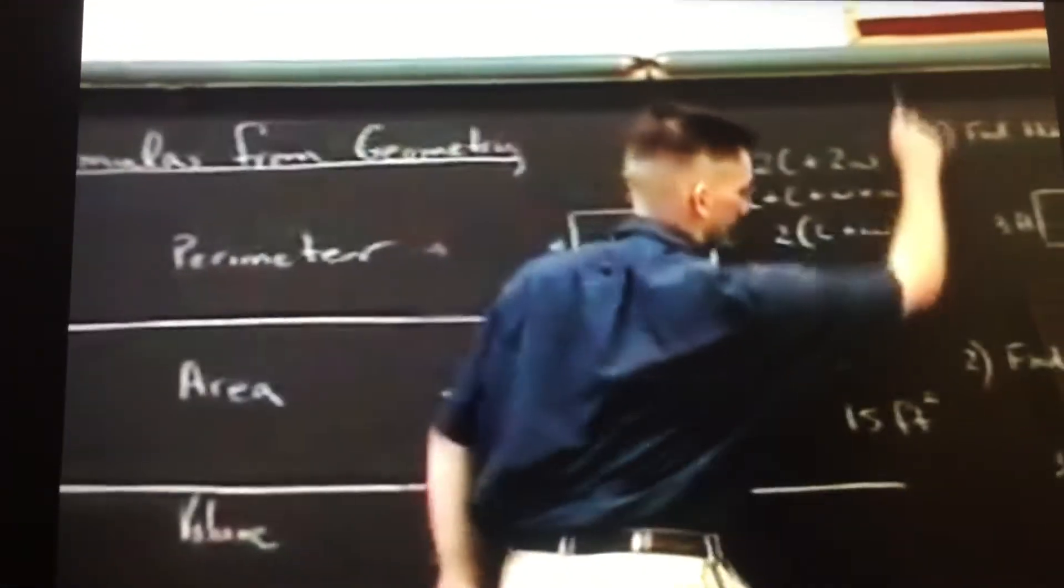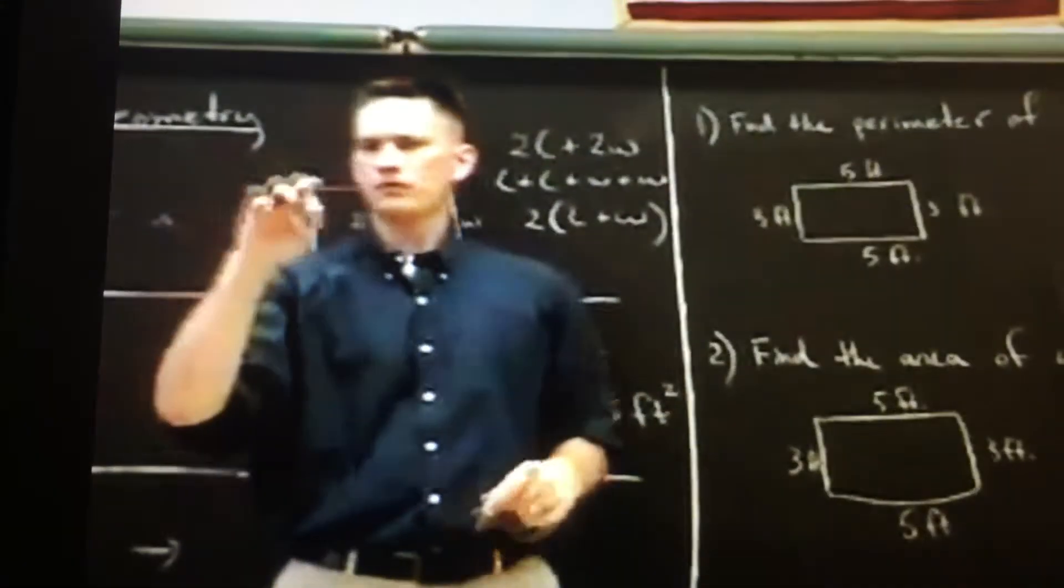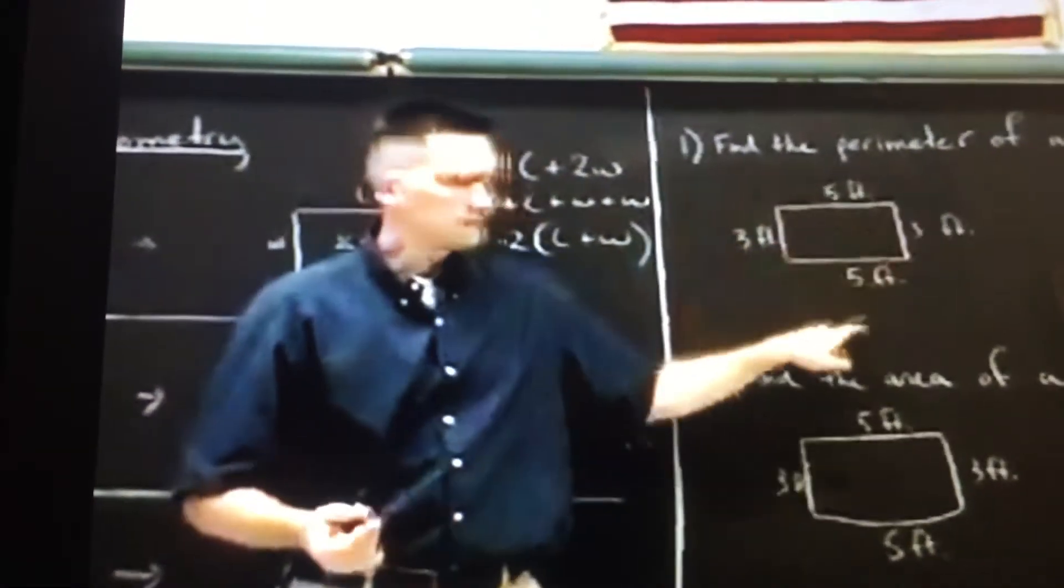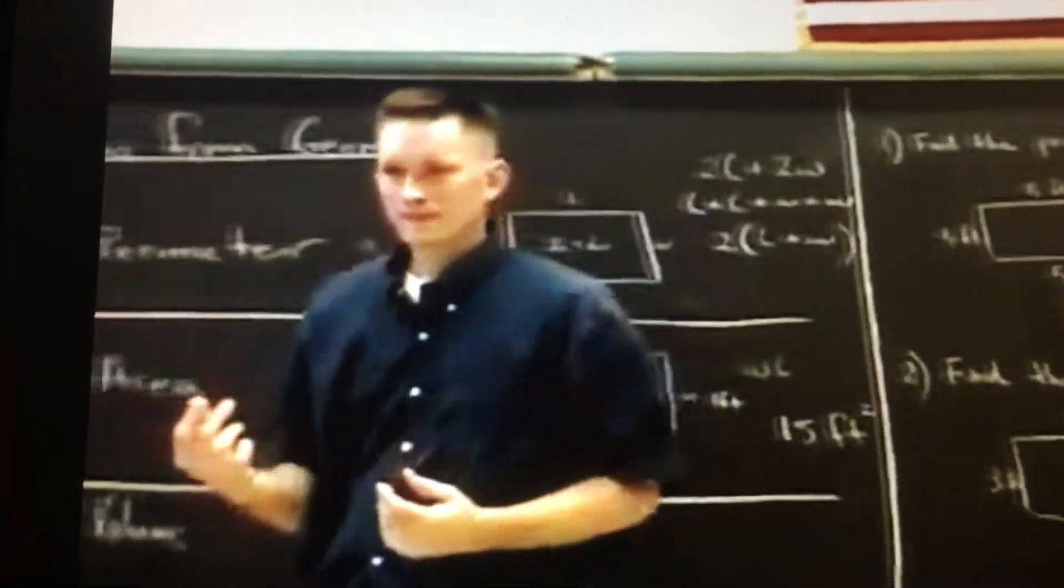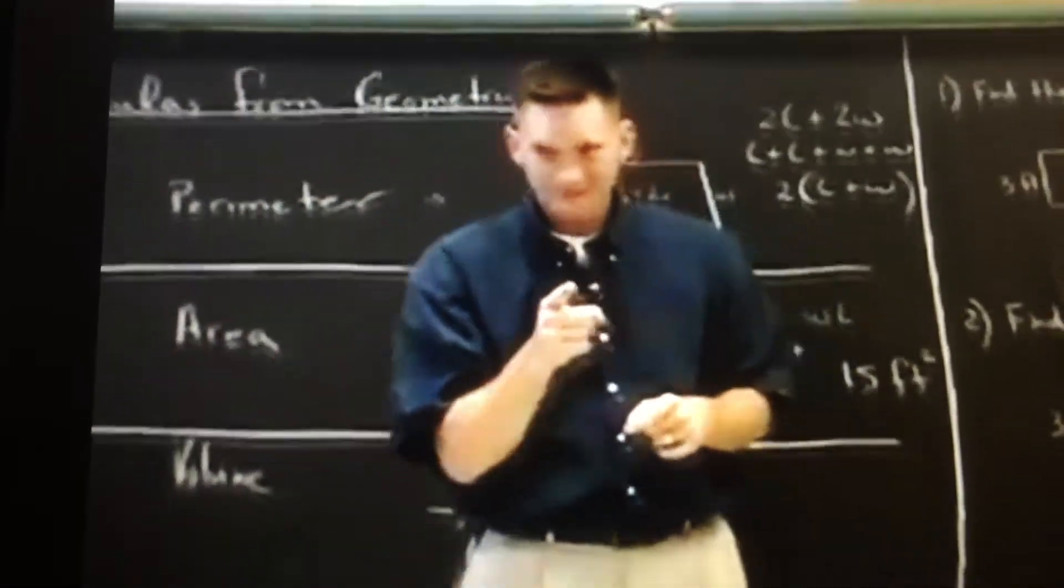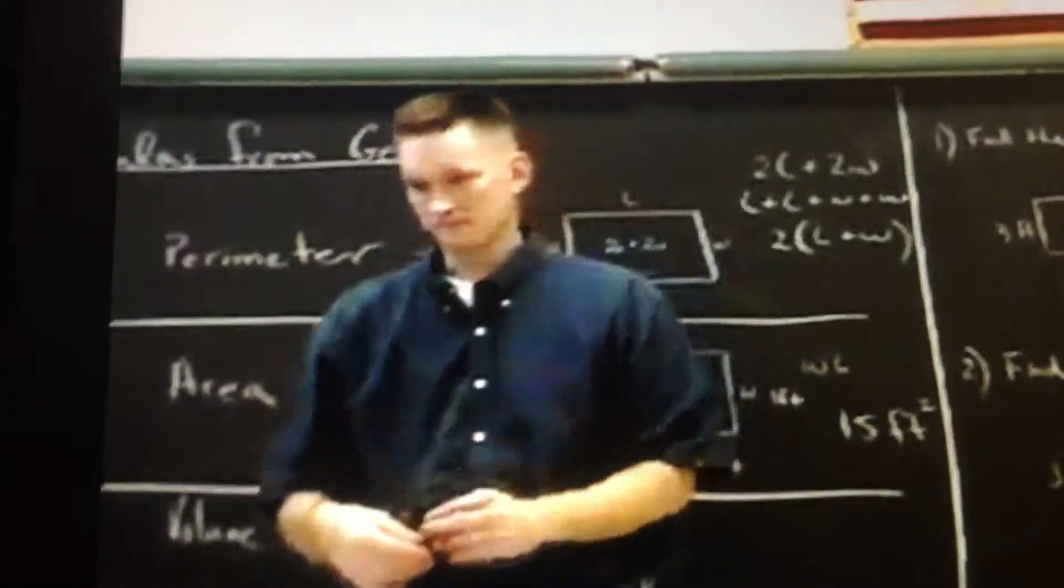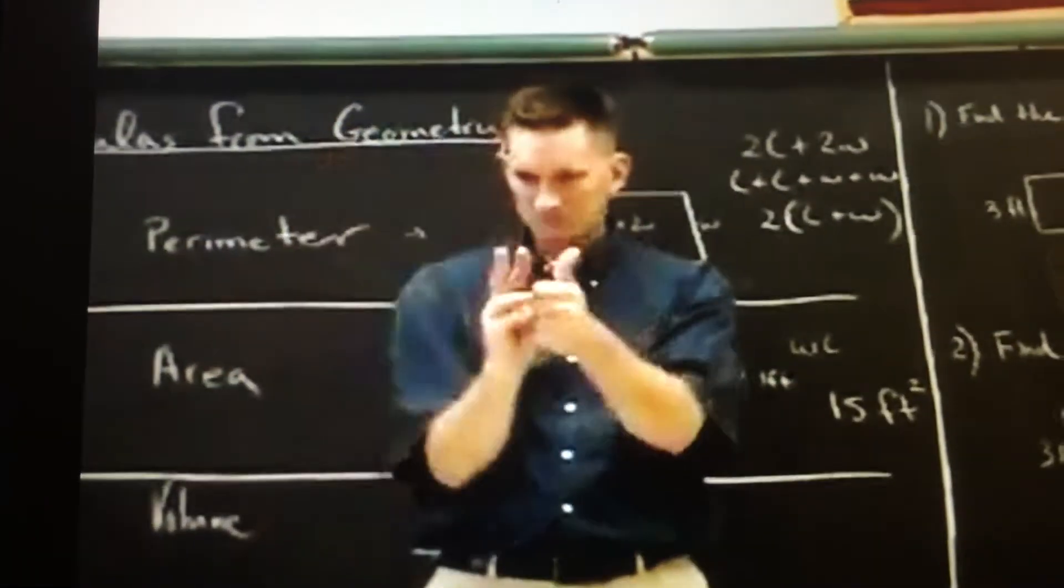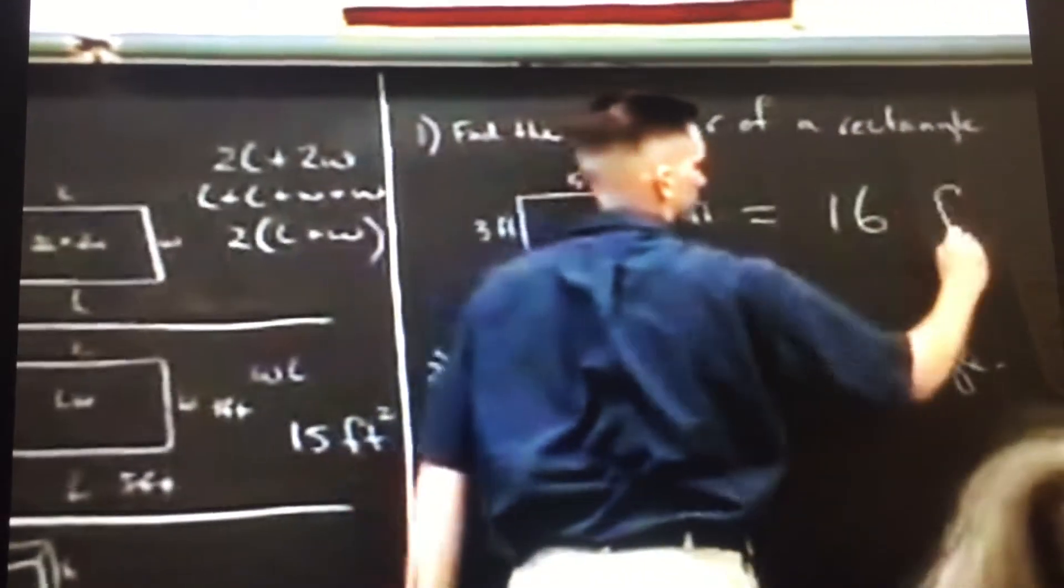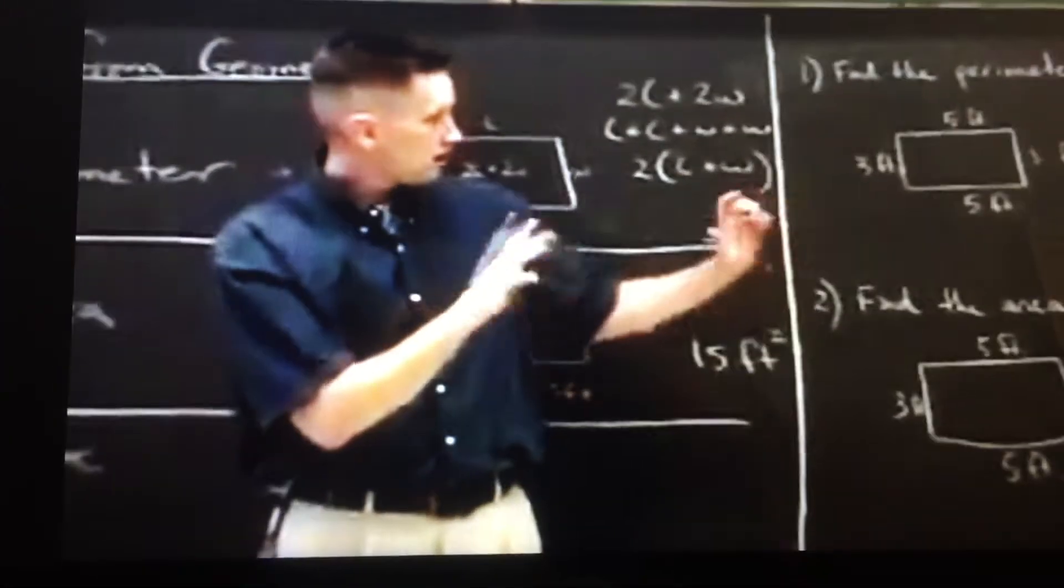I'll show you an example here. Let's find perimeter. Let's find perimeter for this rectangle here. What do you get? 16? How did you get that? You added everything together? Good. Yes. 16 feet is the answer.